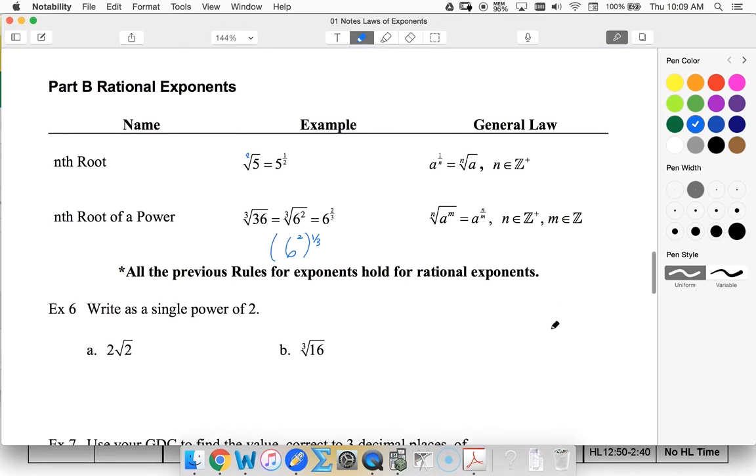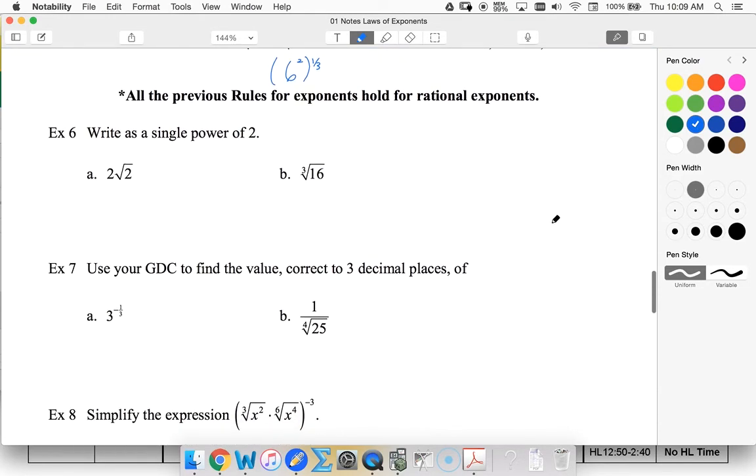So we're going to write as a single power of two down here for our first example. So this is the same as two to the first times two to the half. We know that we're going to sum these exponents, so we're going to get two to the three-halves.